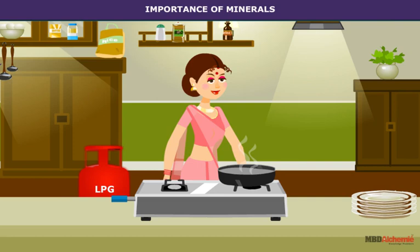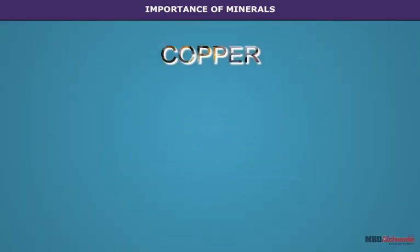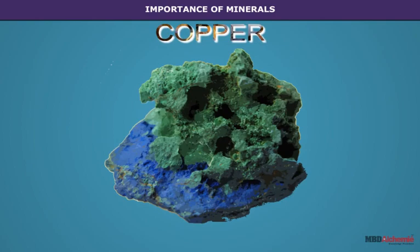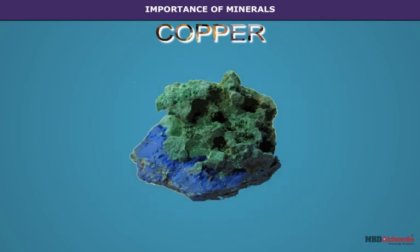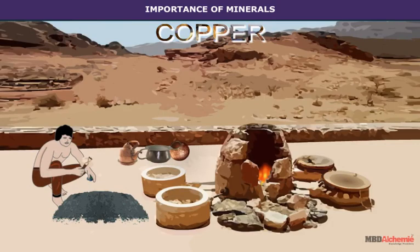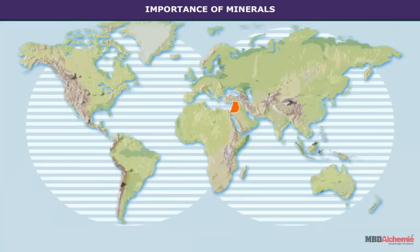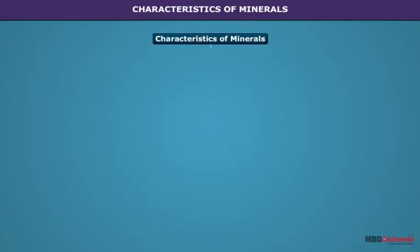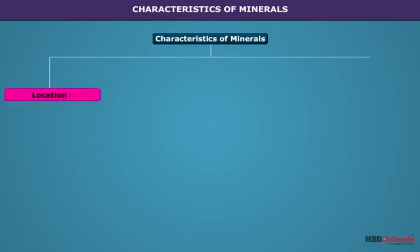Mineral resources have been used since prehistoric times. Copper was the first metal to be used. The Egyptians discovered copper ore as early as the fifth millennium BCE in the Neolithic period and began the world's first copper production center in Timna Valley in Israel. The remains of the abandoned mines and smelting centers show the most extensive example of early mining of any kind in history.